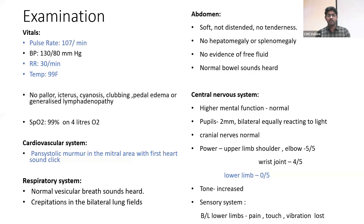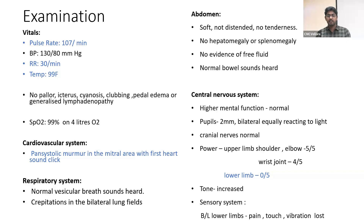On examination, he was tachycardic, tachypneic, with a temperature of 99 Fahrenheit, and his radiation is maintaining 99% on 4 liters of O2. CVS showed a pancystolic murmur in the mitral area with first heart sound click. Respiratory system showed crepitations in the bilateral lung fields.